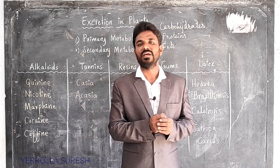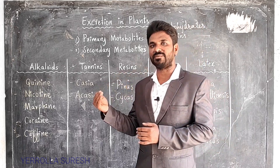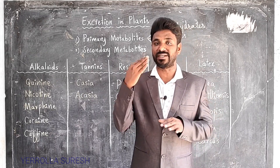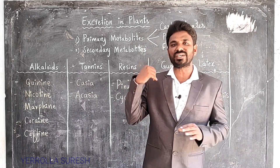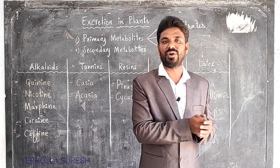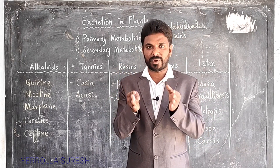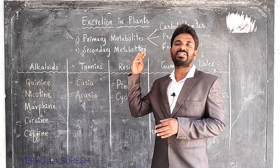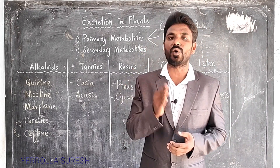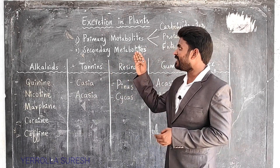Waste materials are stored in different parts of the plant body — some in leaves, some in flowers, some in roots, and some in stems. Plants don't have any special excretory system for regular excretion. When the time comes — when leaves are detached, bark is removed, or flowers fall down — then excretion occurs. Compared to animals, excretion in plants is a very, very slow process.